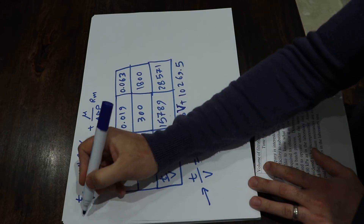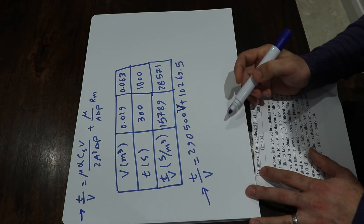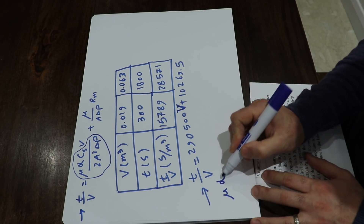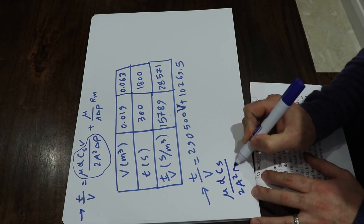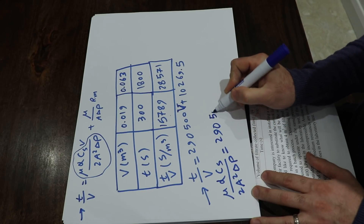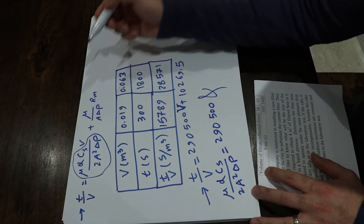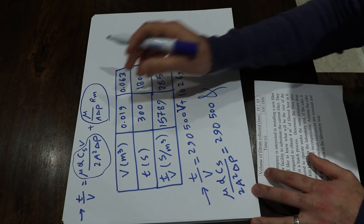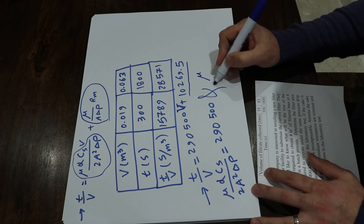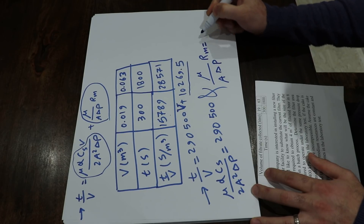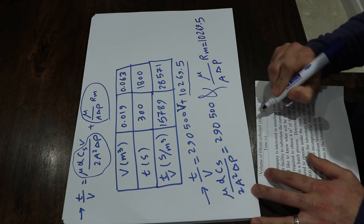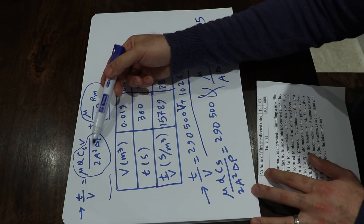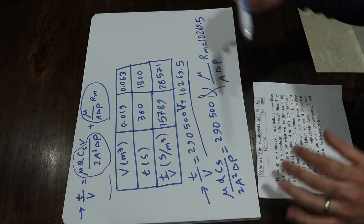Comparing this equation with the general filtration equation, you can identify that the coefficient of V — that is μαcₛ/(2A²ΔP) — equals 290,500. You can also conclude that the constant term — μRm/(AΔP) — equals 10,269.5. The coefficient of V in the derived equation must match that expression, and the constant must equal the intercept calculated.